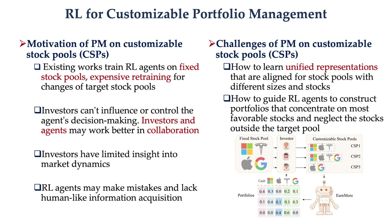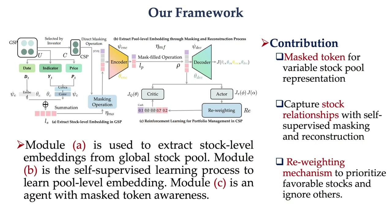To tackle these two challenges, we designed an RL framework called Earn More, with one-time training that accounts for the distinct investment preferences of each investor and invests in various CSPs. Our contributions are threefold: one, we introduce a learnable mask token to represent unfavorable stocks, enabling unified representation of stock pools with different sizes and stocks; two, we derive meaningful embeddings using a self-supervised masking and reconstruction process that captures stock relationships; three, we propose a re-weighting mechanism to rescale the distribution of portfolios to concentrate on favorable stocks and neglect stocks outside the target pool.